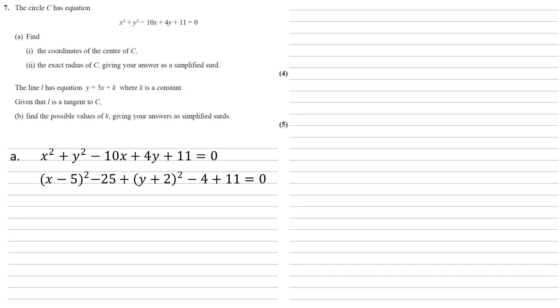We'll do the same thing with the y squared. It's plus 4y in the original equation, so our brackets have to be y plus 2, because then we'd get two lots of 2y. We're going to take away the 2 squared to take away the 4, and then we've still got that original plus 11 on the end.